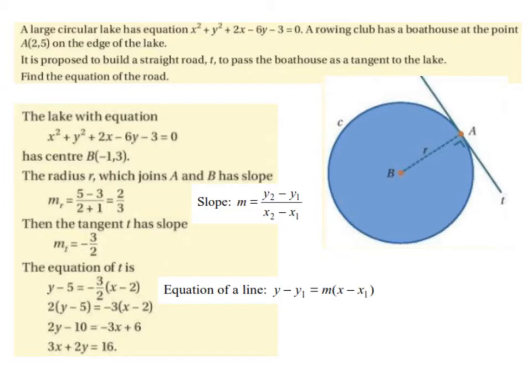Then we can simplify. So to get rid of this fraction, we can multiply across by 2. So we end up with 2(y minus 5) equals minus 3(x minus 2).